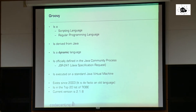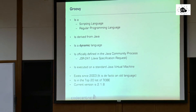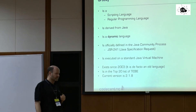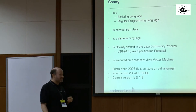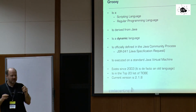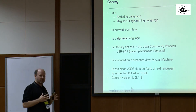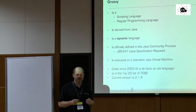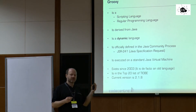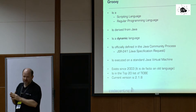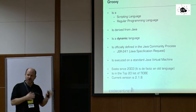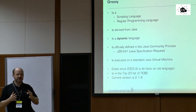Groovy is a scripting language on one hand and a regular programming language on the other. It runs on the virtual machine and is derived from Java. This means that every Java program is a syntactically correct Groovy program. This was not absolutely true in the beginning — there was one exception — but since around 2010, every Java program is a correct Groovy program.